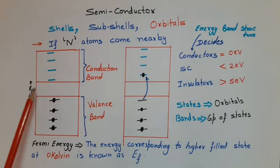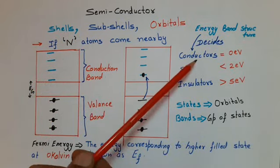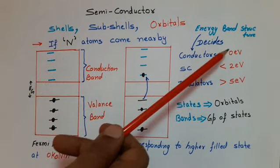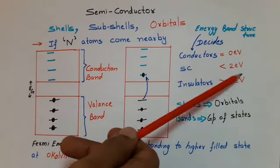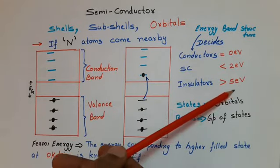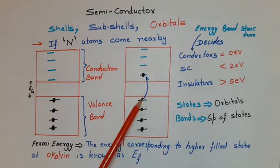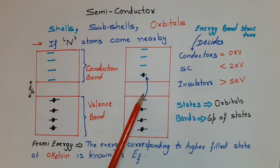The width of the energy band gap decides whether a material will be a metal, insulator, or semiconductor. In case of metals, there is no energy band gap at room temperature. In semiconductors, the energy band gap is less than 2 electron volts, while in insulators it is more than 5 electron volts. In semiconductors, even at room temperature, electrons receive enough energy greater than the band gap, and that is why electrons move from the valence band to the conduction band.